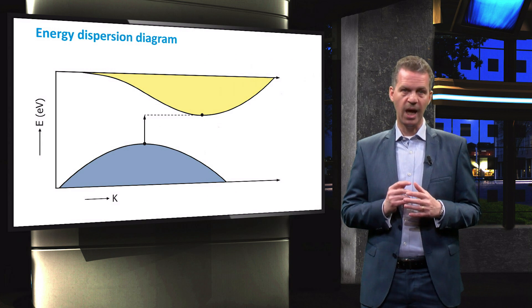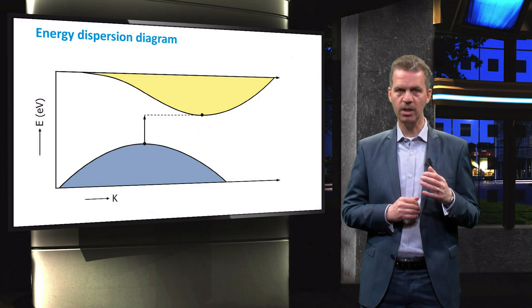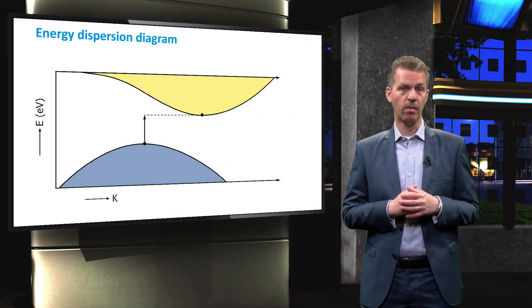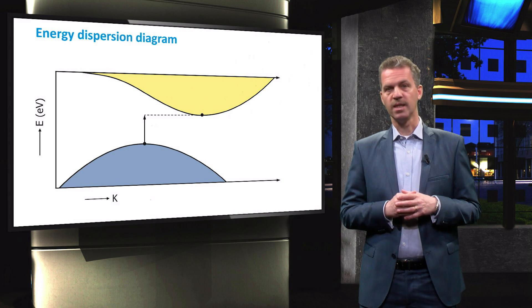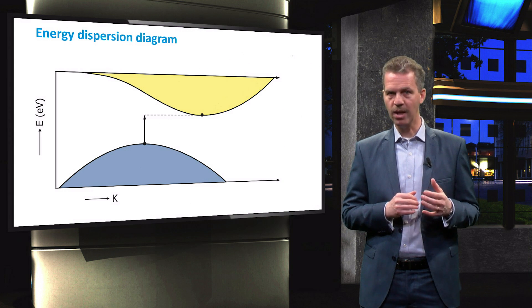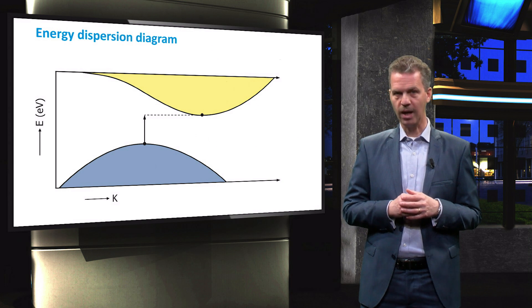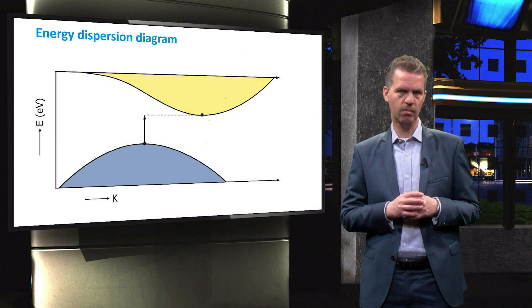Silicon is what we call an indirect bandgap material. This has implications for the absorption of light, as photons can only be absorbed if the excited electron gains momentum in the lattice to reach the conduction band. This momentum can be transferred to the electrons by lattice vibrations, which are also called phonons. Since this interaction is required and the energy and momentum in the crystal should be conserved, the light absorption of an indirect bandgap material such as silicon is much lower than a direct bandgap material.